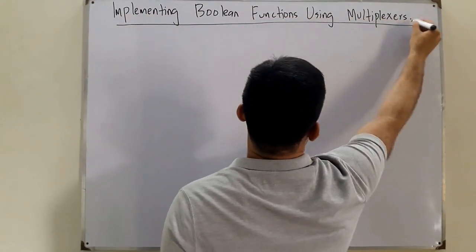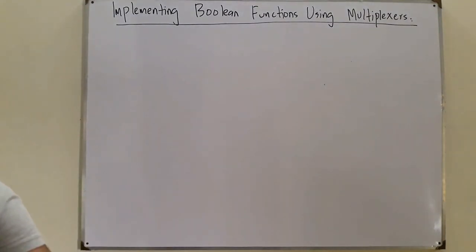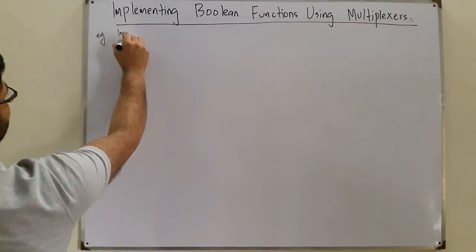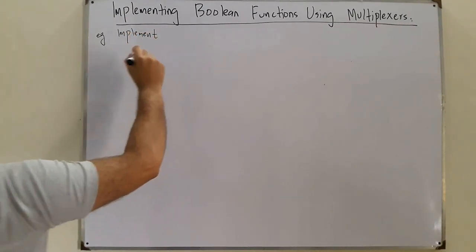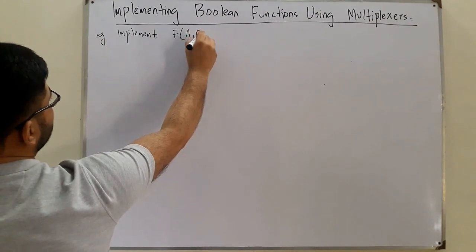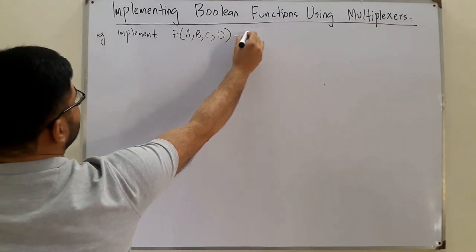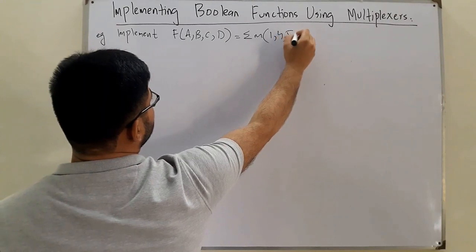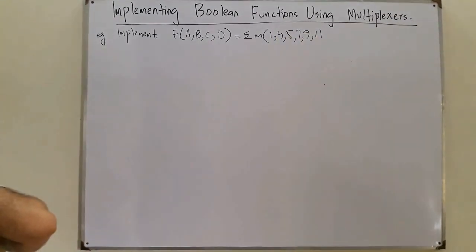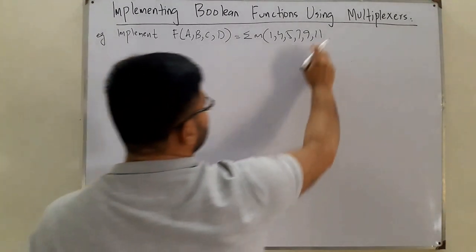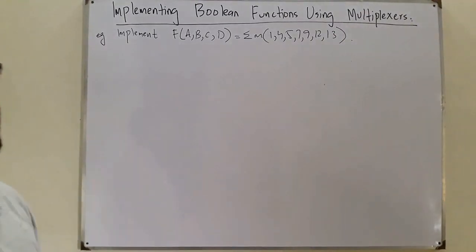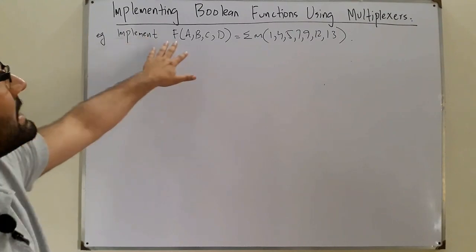Today we combine them and see this through an example. Implement a boolean function f(a,b,c,d) given in the form of minterms: 1, 4, 5, 7, 9, 12, and 13. This is the format the question will be given in your paper.